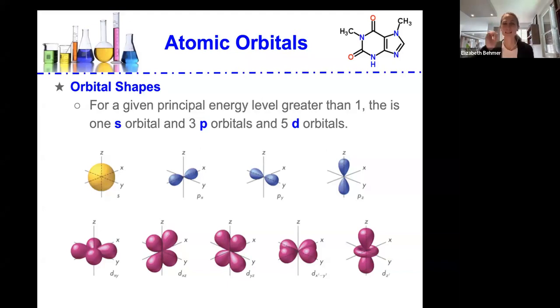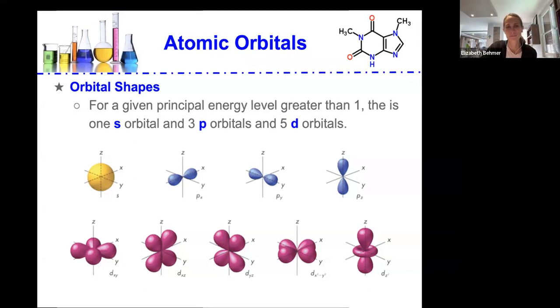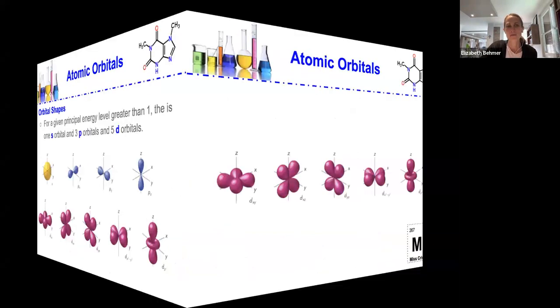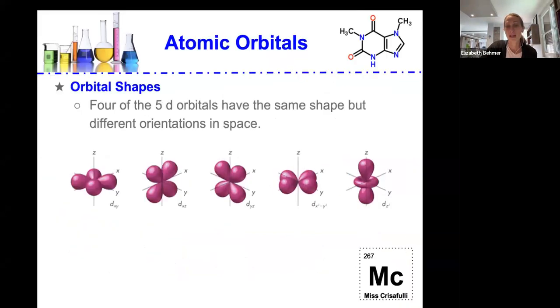And five d orbitals as shown by this shape. So what we're getting at here is we're looking at the atomic orbitals and shapes of these orbitals for the electrons that are orbiting around the nucleus of an atom.